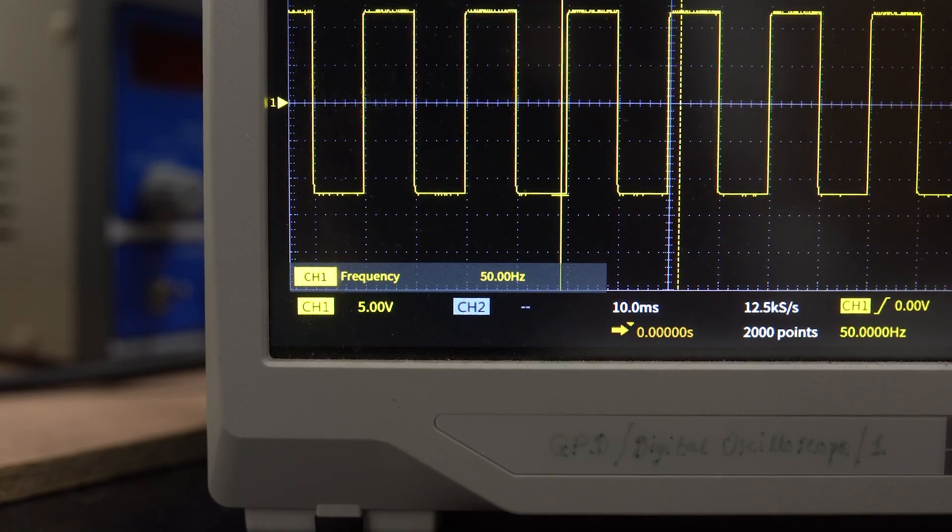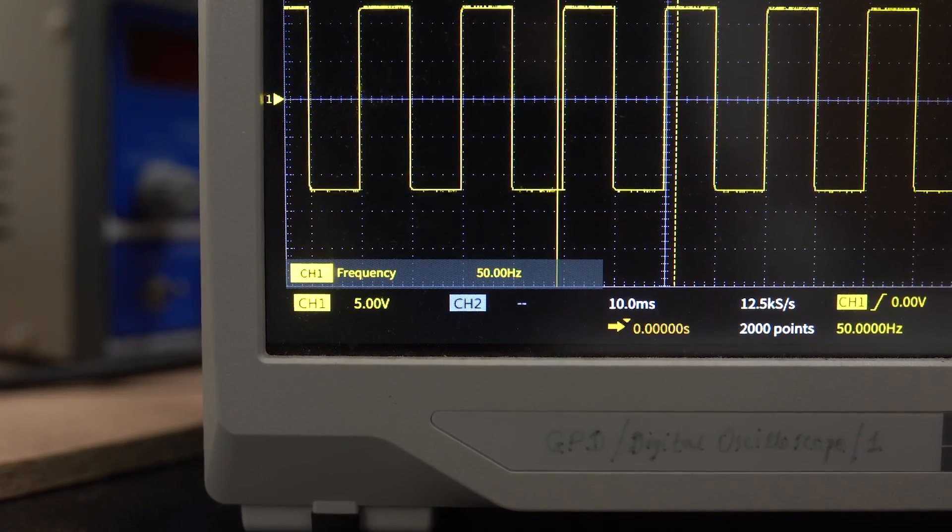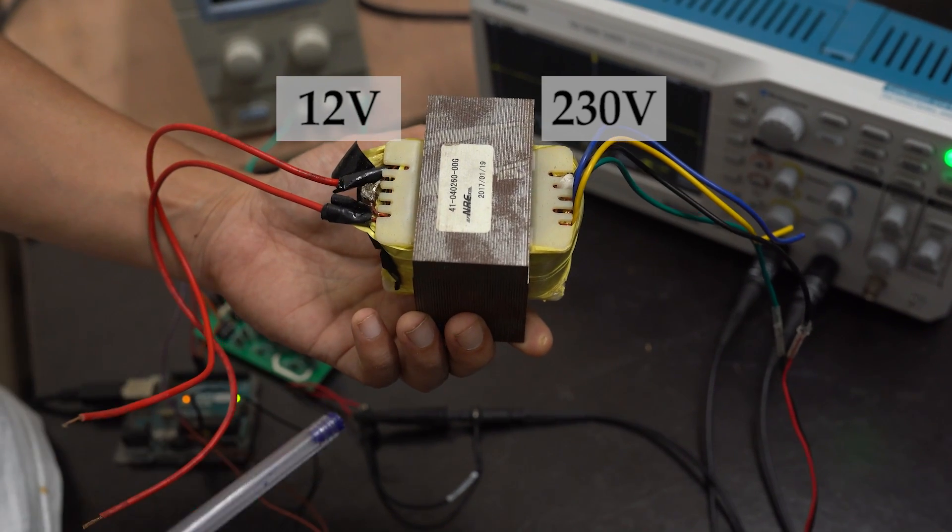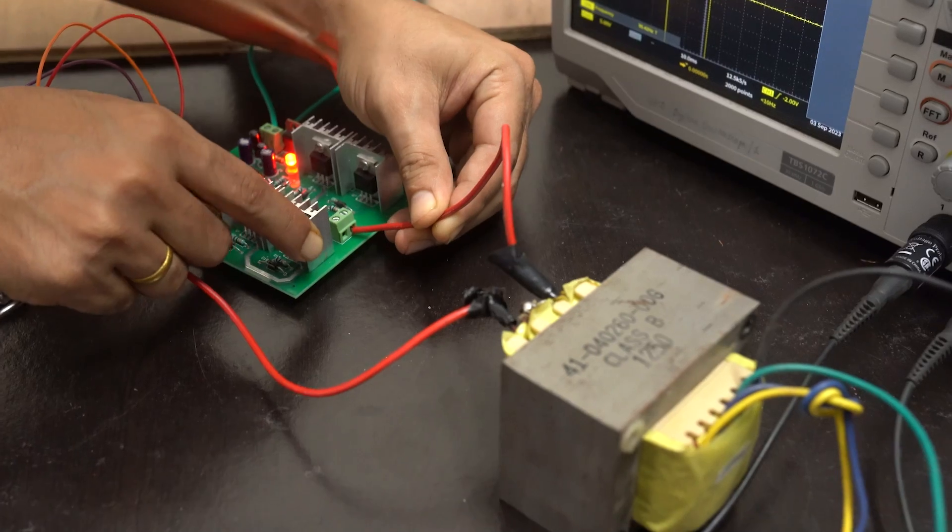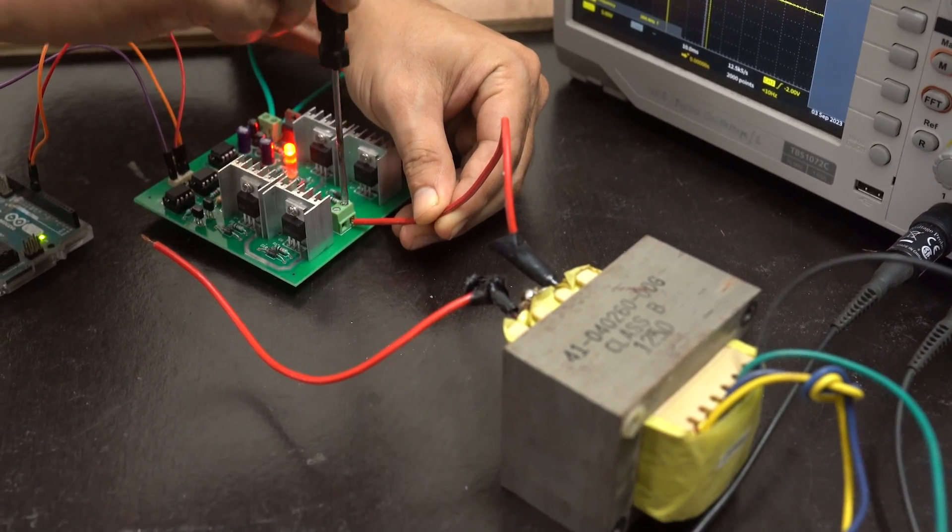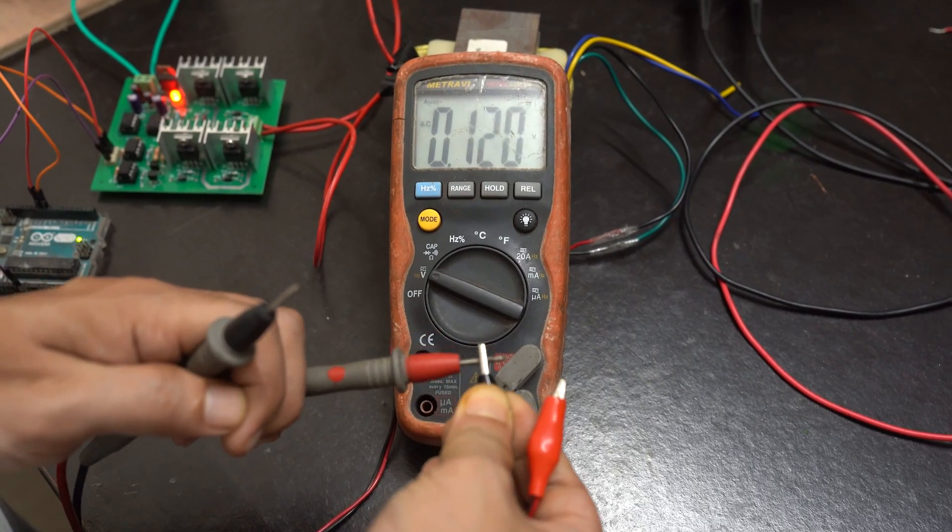Next, you need a 12-volt by 230-volt step-up transformer and connect its 12-volt side to the output terminals of the module. Before you connect an LED lamp, cross-check the output voltage of the transformer, which should not be more than 230 volts.